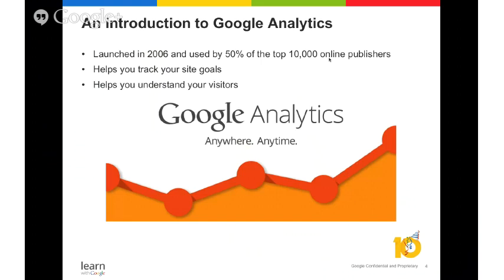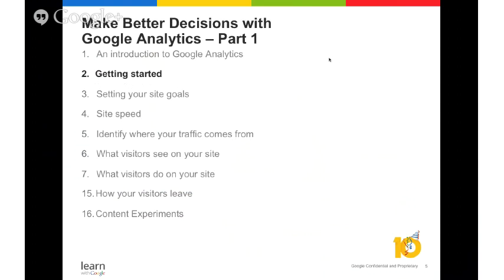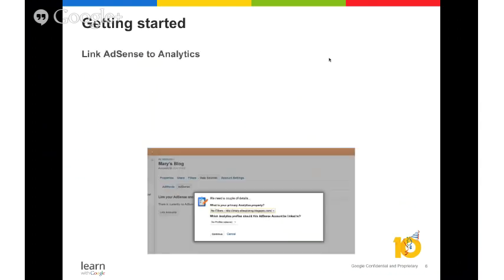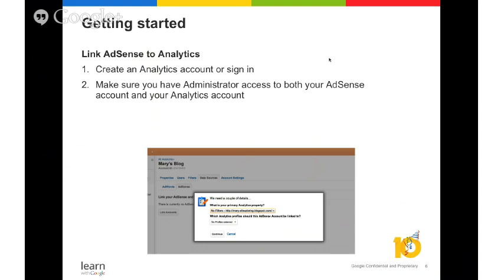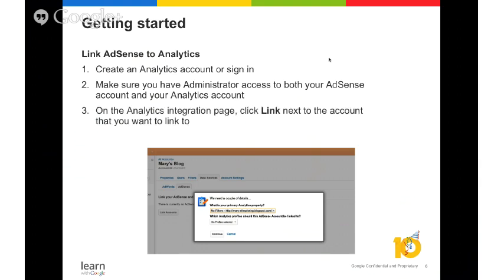We launched Google Analytics in 2006, and it is now used by more than 50% of the top 10,000 publishers online. It's a free product that can link both AdSense and AdWords to track a wide variety of site goals and conversions. Linking AdSense can give you valuable information and tools to optimize your ads. I've worked with publishers who have grown their revenue by more than 30% just by taking advantage of the insights that analytics offers.